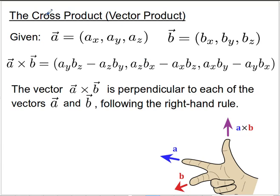In general, we're going to want to define the cross product for two generic vectors — not just the basis vectors. We want to take the cross product between vector A, which has an X, Y, and Z component, and vector B, which also has an X, Y, and Z component. The result of the cross product A cross B is this fairly complicated-looking vector in component form.